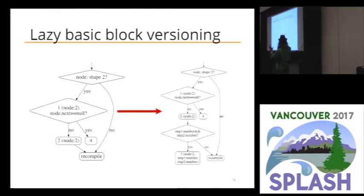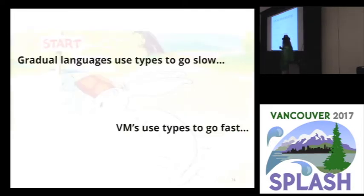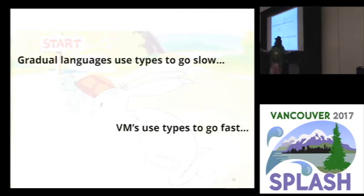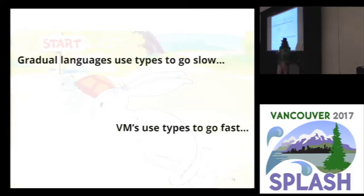We use a lazy basic block versioning based JIT — it's called Higgs, it's from Montreal. Somehow gradually typed languages have been using types to go slow, while virtual machines also need types to go fast. How did we end up in that world? Simply, there's an impedance mismatch. Virtual machines are using types in one way, gradually typed languages in a different way. The point of this work was to see if we could munch gradually typed languages and VMs a bit to get a compromise somewhere in between.